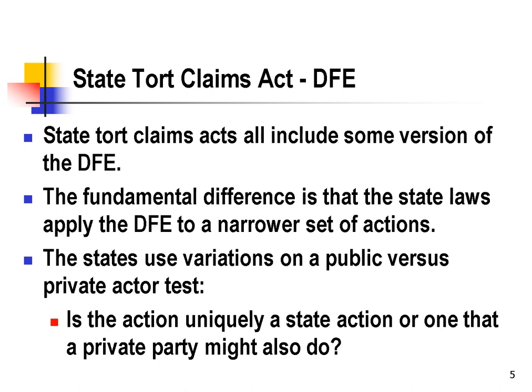State Tort Claims Acts all include some version of the discretionary function exception. The real difference is that state laws apply the discretionary function to a narrower set of actions. States are on balance more suspicious of government action than are the federal courts. In most states the test comes down to a public versus private actor test: is the action something that's uniquely a state action, something only government can do, or is it something that a private party might also do?